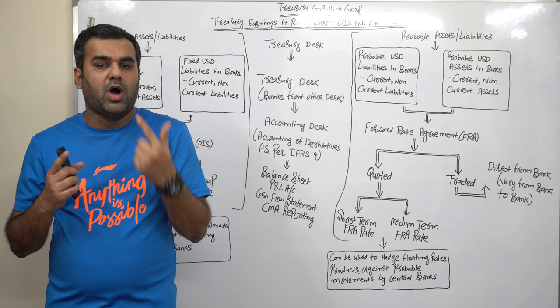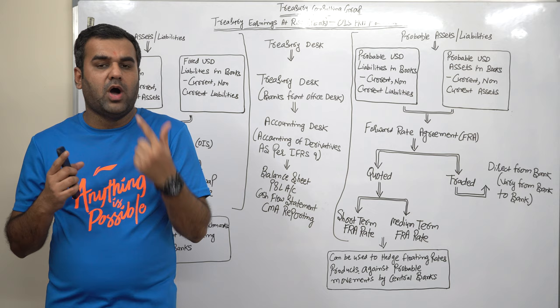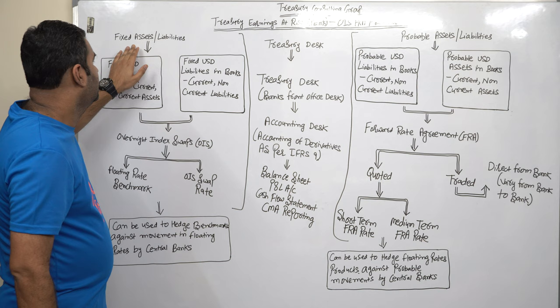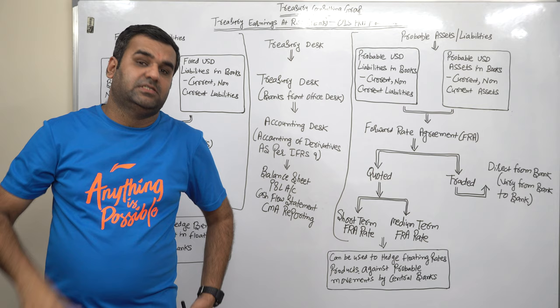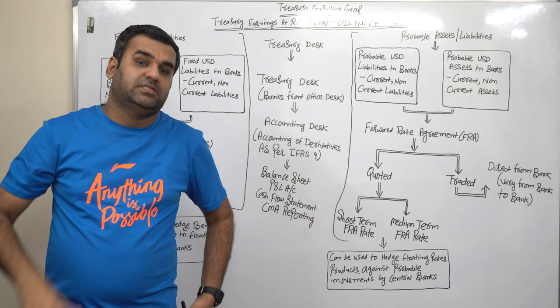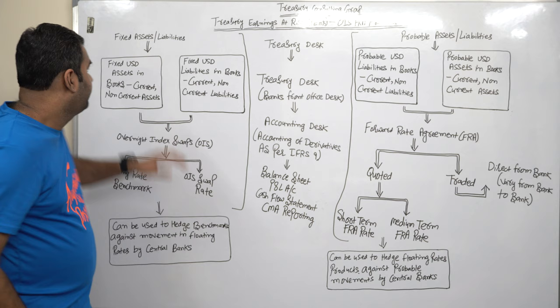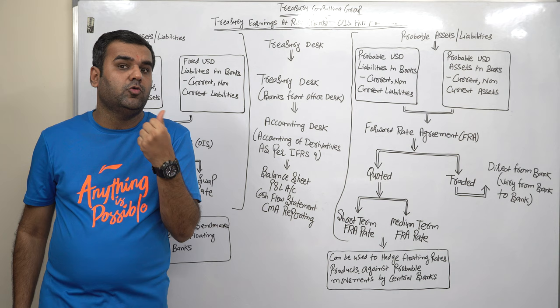One which you have. One which is probable to come. Now I have categorized this as FX which is fixed assets and liabilities. While one, I am saying fixed means, it doesn't mean that it is fixed assets in an accounting policy which is plant and machinery, fixtures and furniture. No. Fixed means I know I have that.